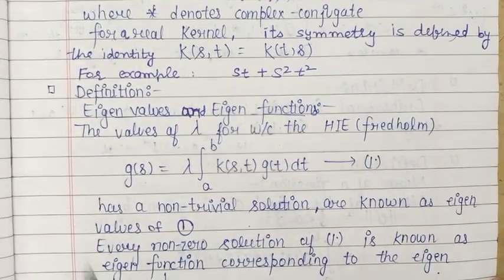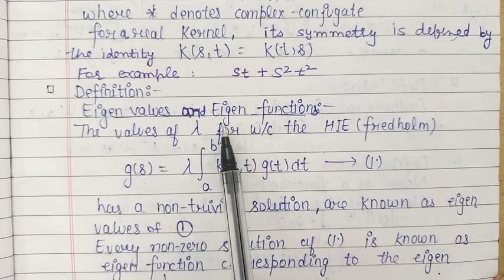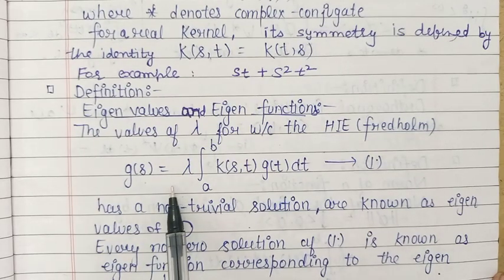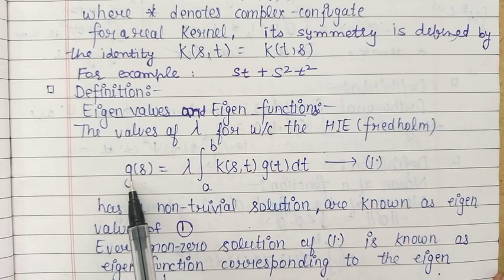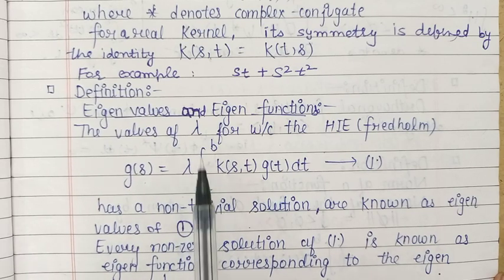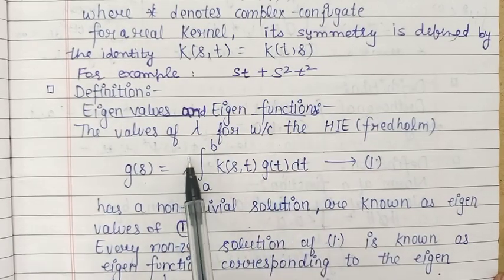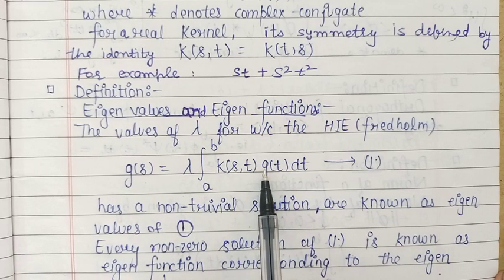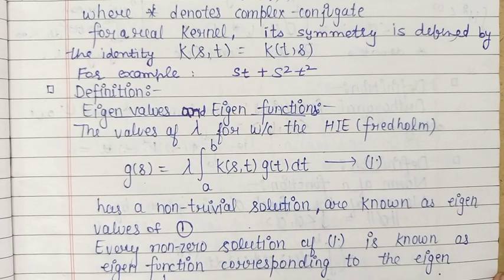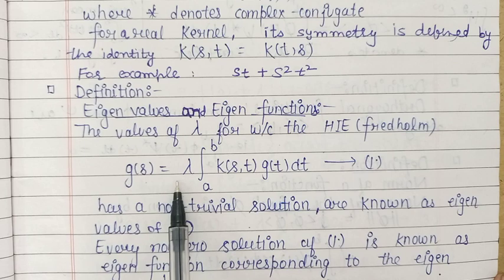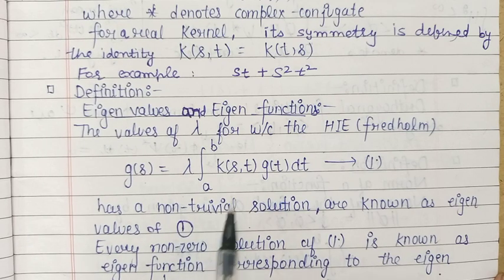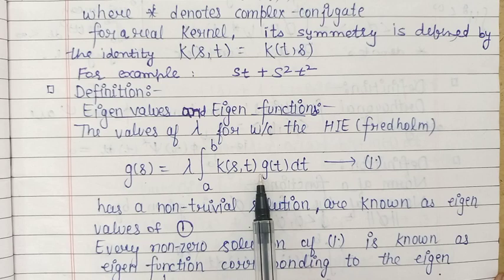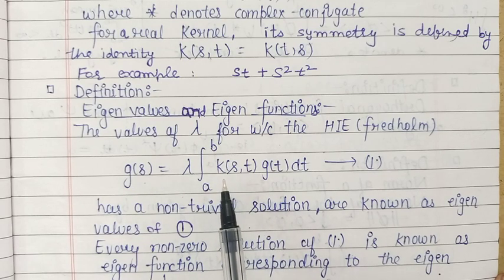Next, we define eigenvalues and eigenfunctions corresponding to a given integral equation. Consider a homogeneous Fredholm integral equation defined by g(s) = lambda times the integral from a to b of k(s,t) g(t) dt. Here, lambda is a parameter, k is the kernel, and g is the unknown function. The values of lambda for which this integral equation has a non-trivial, that is non-zero, solution are called the eigenvalues of this integral equation, or eigenvalues of the kernel k.